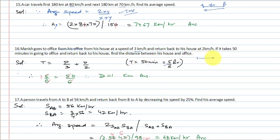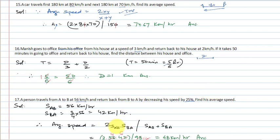Distance from his house to office is d = 1 km. Coming to question number 17: A person travels from A to B at 56 km per hour and returns from B to A by decreasing his speed by 25%. Find his average speed. We use the same formula: 2xy upon x plus y.